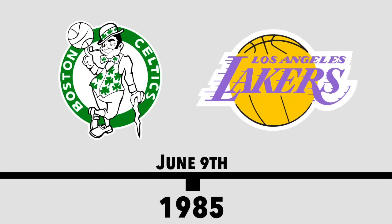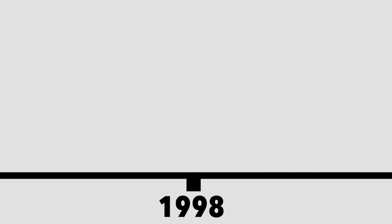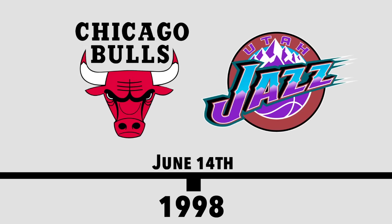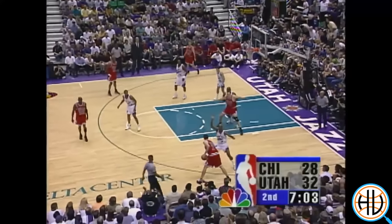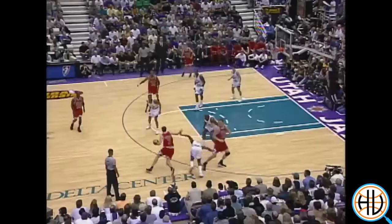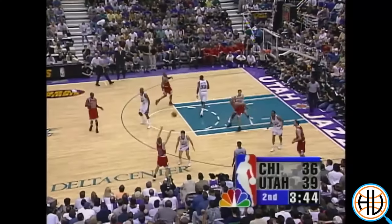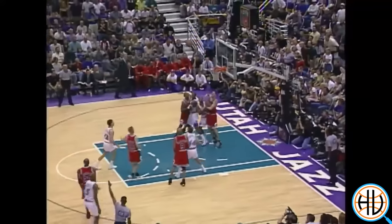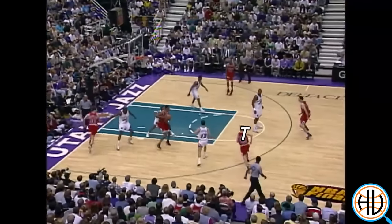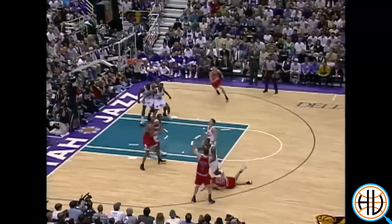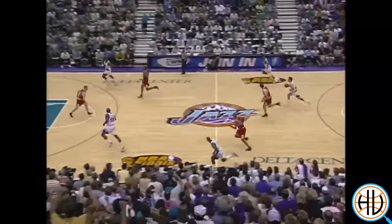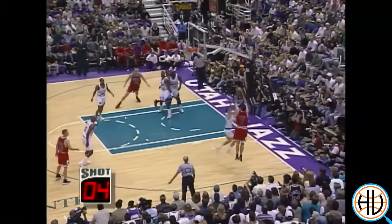Moving on to the 1998 Finals: the three-point line is now a little more prevalent. Michael Jordan started out Game 6 by hitting three threes in just the first half — one off a Dennis Rodman screen while Tony Kukoc came off an empty ball screen, and another off the Bulls' split action out of the triangle offense. The Jazz even hit a pull-up three in transition. All that being said, there were still only six combined three-pointers made by the two teams — nowhere near the amounts we see nowadays.